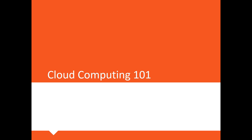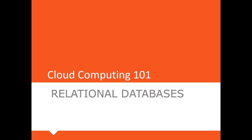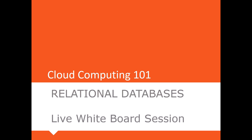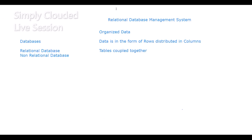Hello friends, this is Cloud Computing 101 by Simply Clouded. Today our topic is relational databases, and we are going to share one of our live whiteboard sessions to explain this. What are relational databases? The emphasis is on the word 'relational' — relational means that there are relationships between multiple tables. Let's take a simple example of a school database.